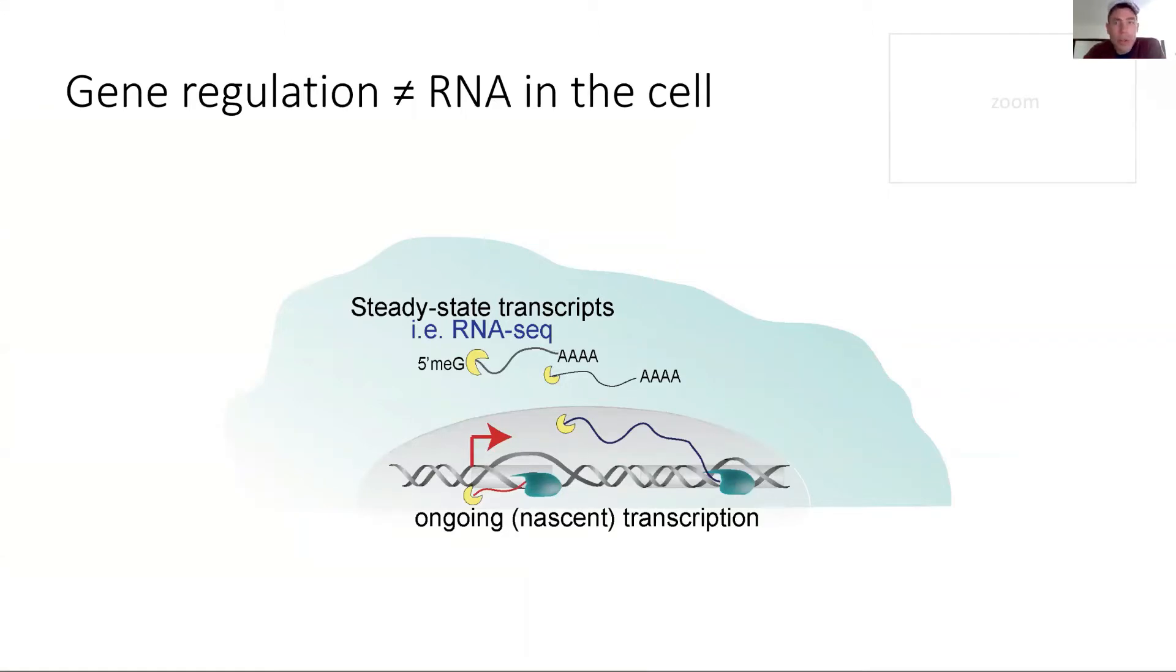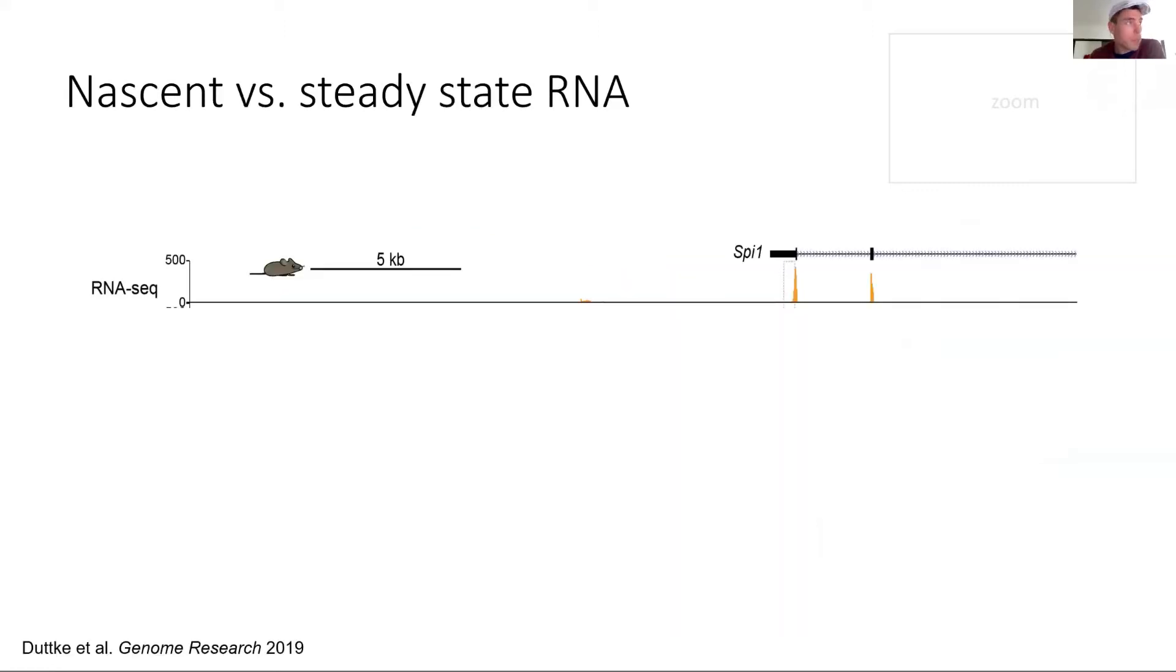A little bit of background: when we talk about gene regulation, the RNA as captured by RNAseq—steady state RNA—might actually not be expressed at that moment because it's stable. The steady state RNA is different from what is currently ongoing in transcription, sometimes referred to as nascent or ongoing transcription. CSRNAseq does not capture the steady state transcript but the ongoing one, and therefore it's more sensitive.